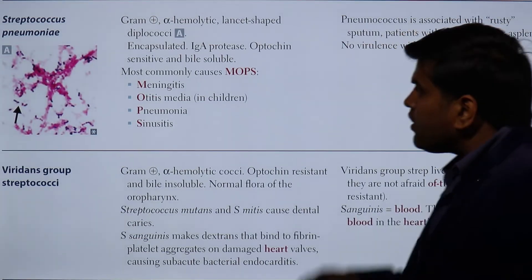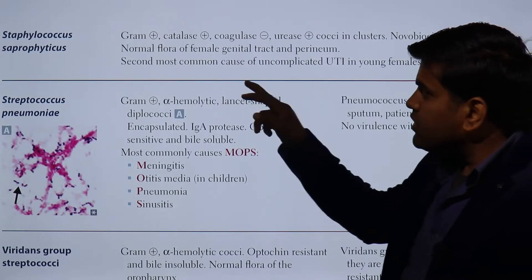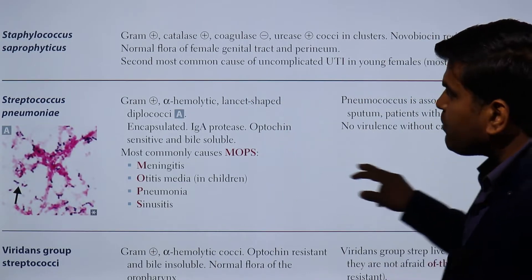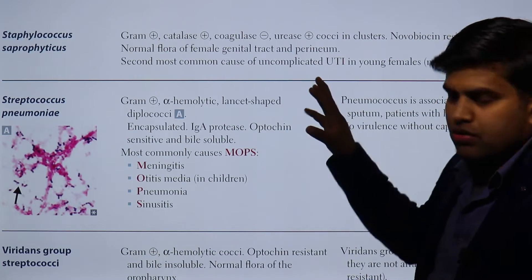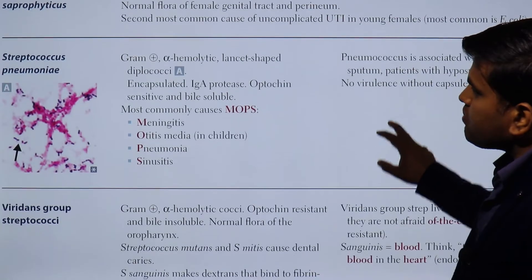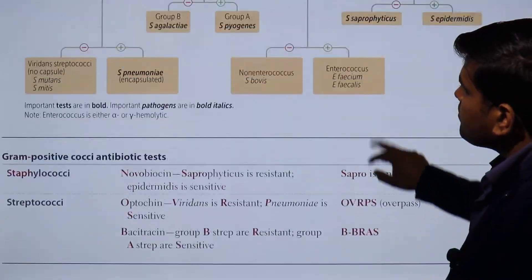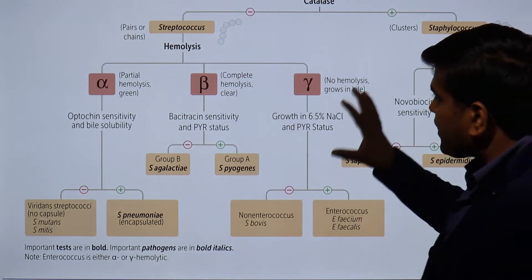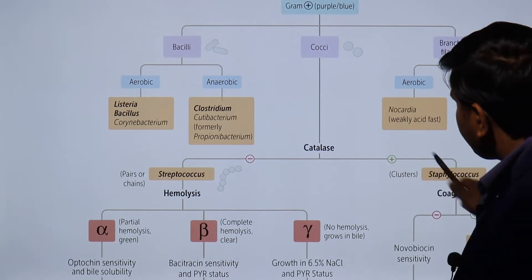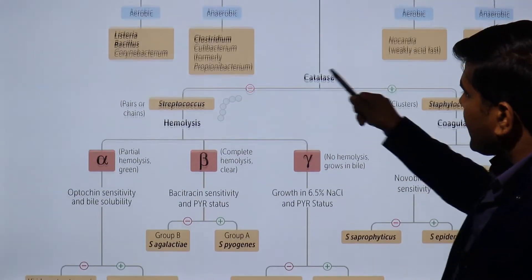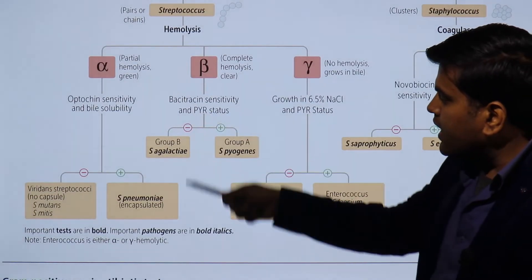Welcome again. We were initially discussing staphylococcus, and we are on page 136 of USMLE Step 1 2021. We have already completed the discussion on staphylococcus species in the previous lecture. Now we are talking about streptococcus species. If you remember the same tree diagram, gram positive cocci that are catalase positive go to the staphylococcus group, and catalase negative go to the streptococcus group.